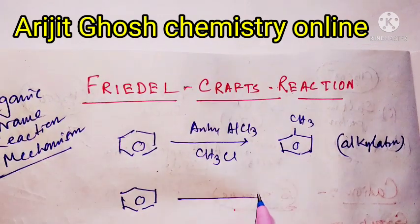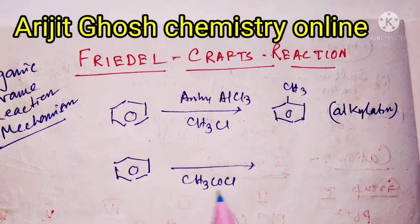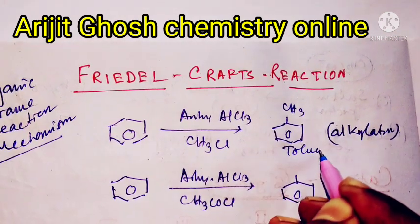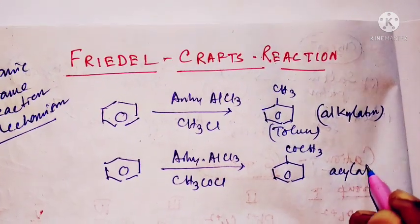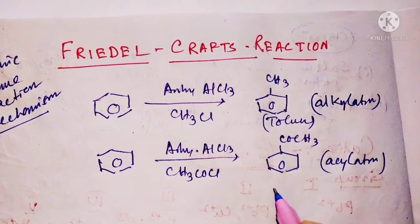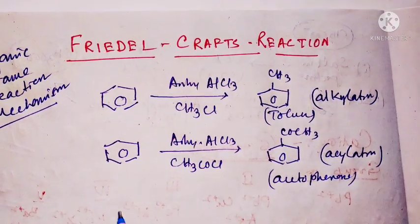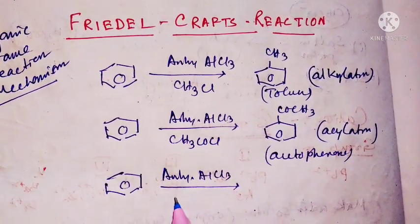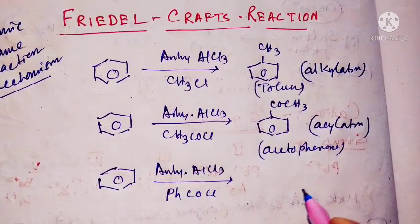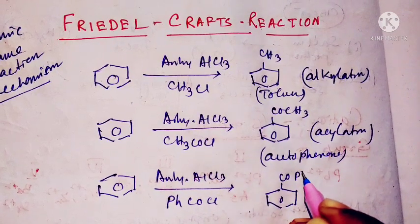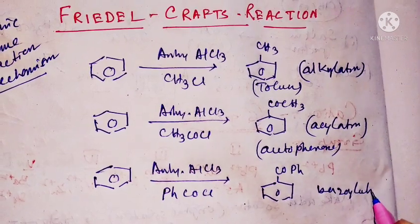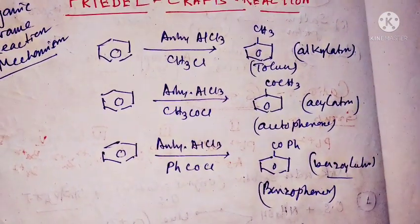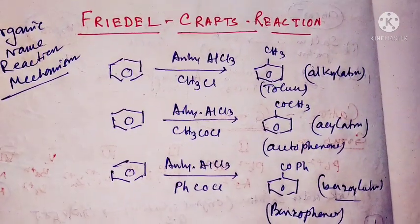For Friedel-Crafts acylation, in presence of CH3COCl and anhydrous aluminum chloride, starting from toluene, acylation produces acetophenone. And third, benzene in presence of anhydrous aluminum chloride with benzoyl fluoride undergoes benzoylation to produce benzophenone. These are the three main steps: alkylation, acylation, and benzoylation.